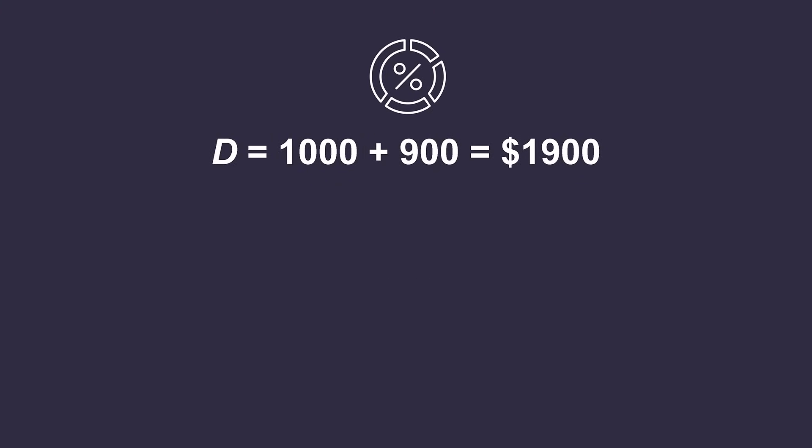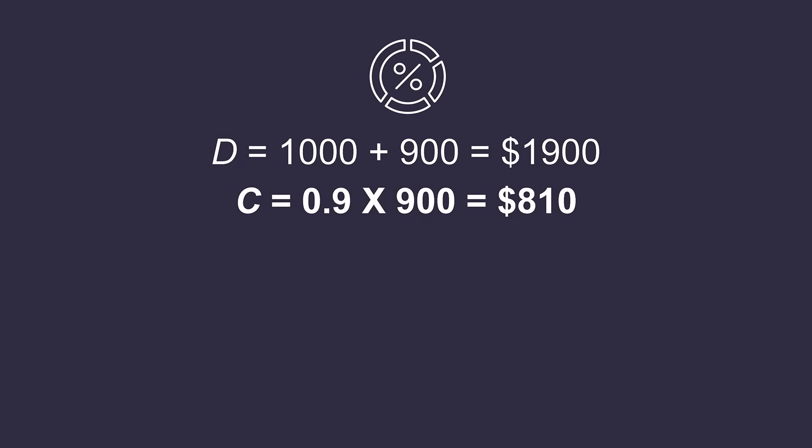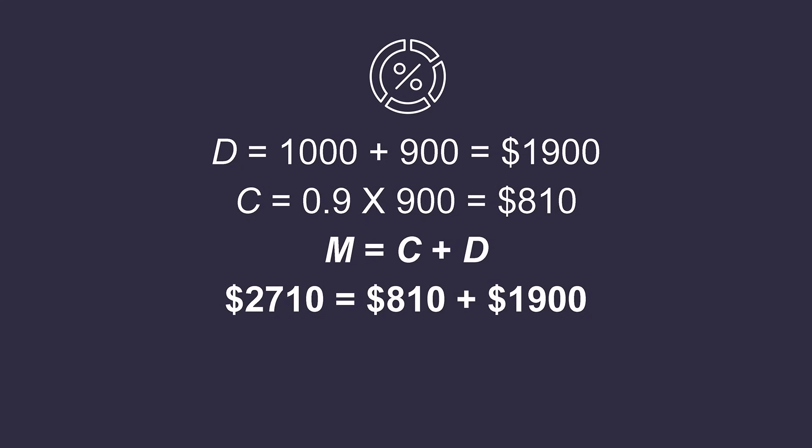The money supply creation process does not have to stop with a single borrower. If this borrower decides to deposit their $900 loan proceeds into a bank as well instead of holding it as cash, and that bank also keeps just 10% of the new deposit as reserves and lends out the rest, we will end up with additional increases in deposits and currency. An additional deposit of $900 gives us $1,900 in total deposits. The second borrower receives 0.9 times $900 equals $810 in new loans, which if held as currency gives us C equals $810. Adding currency and deposits together gives a grand total of $2,710 in money supply. By depositing its borrowings back into the banking system, the first borrower has helped create more money.